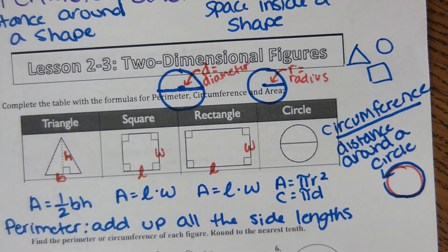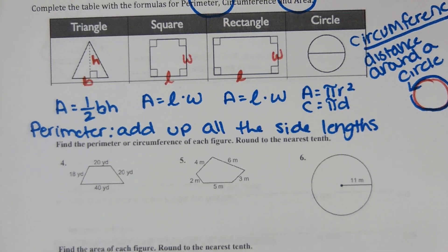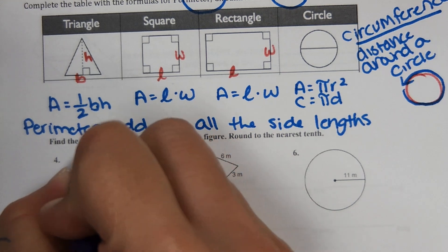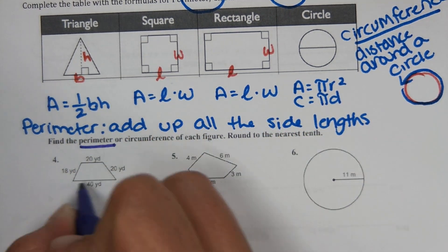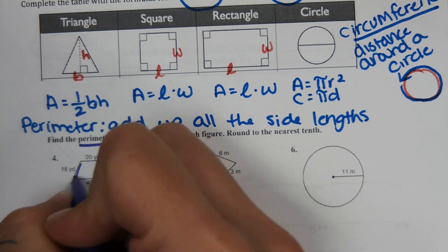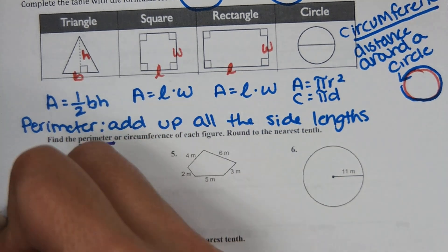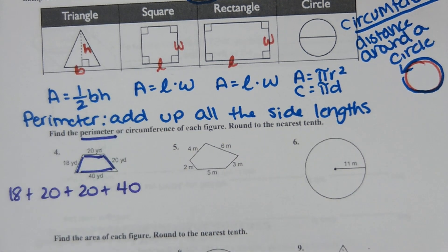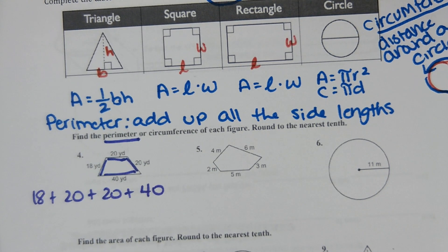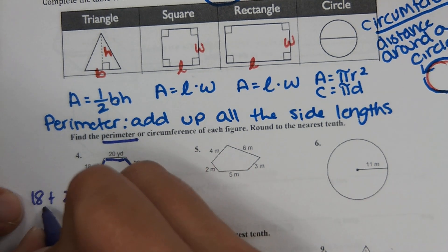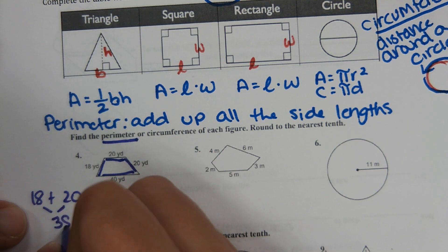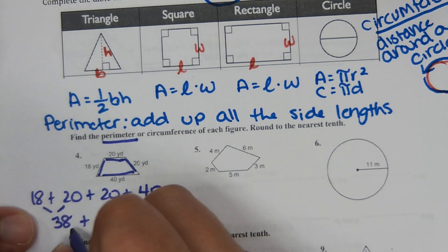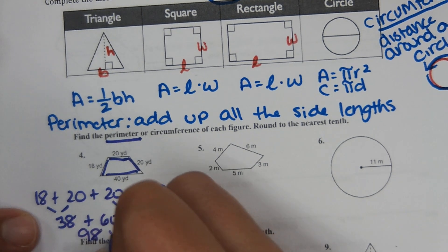Now we're going into the practice. It says find the perimeter or circumference of each figure, round to the nearest tenth. For number 4, we add up all the side lengths: 18 plus 20 plus 20 plus 40. 18 plus 20 is 38, 20 plus 40 is 60, and 38 plus 60 is 98 yards.